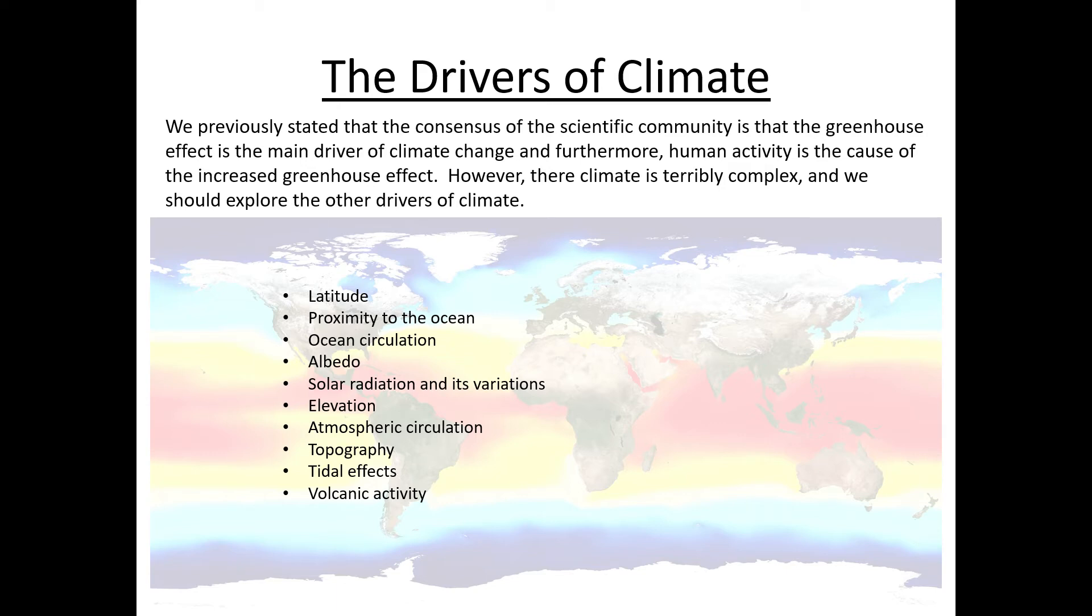Solar radiation and its variations—the sun itself, its output, how much energy it's outputting at any particular moment. It does go through cycles and we want to take a look at those as well. You can think about elevation.